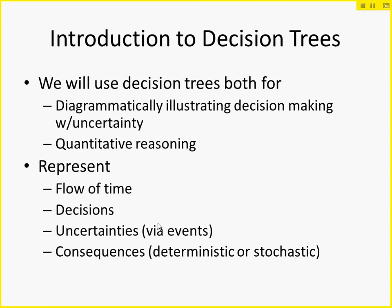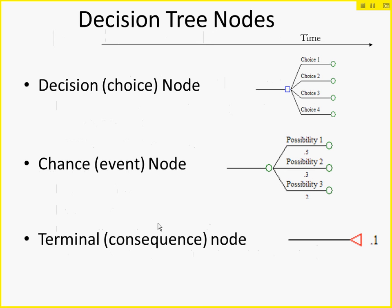Within a decision tree, diagrammatically it's a branching hierarchical structure with a variety of node types. We have decision nodes, shown as blue squares. A decision node has one or more children representing possible choices — you choose which decision you're interested in. The goal of the decision tree is to advise us, given our assumptions, which choice is most effective and will yield the greatest benefit.